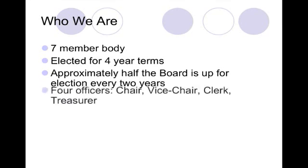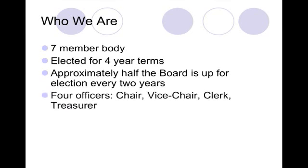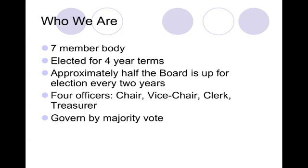There are four officers on the school board: a chair, a vice chair, a clerk, and a treasurer. The school board governs by majority vote. This means that on each issue, once a vote has been taken, that will be the decision made by the board. It's not a consensus-building decision, so there may be votes where a majority of the board has supported an issue but some members have chosen to vote against it.